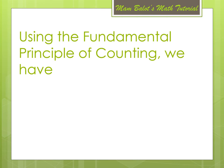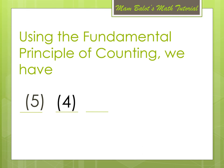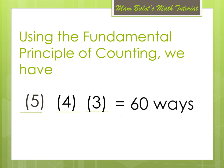Now, if we use the Fundamental Counting Principle, we have 3 choices: 5 for choosing the first kid, then 4 choices for choosing the second kid, times 3 choices for choosing the third kid. So all in all, we have 60 ways in choosing 3 of them out of 5.